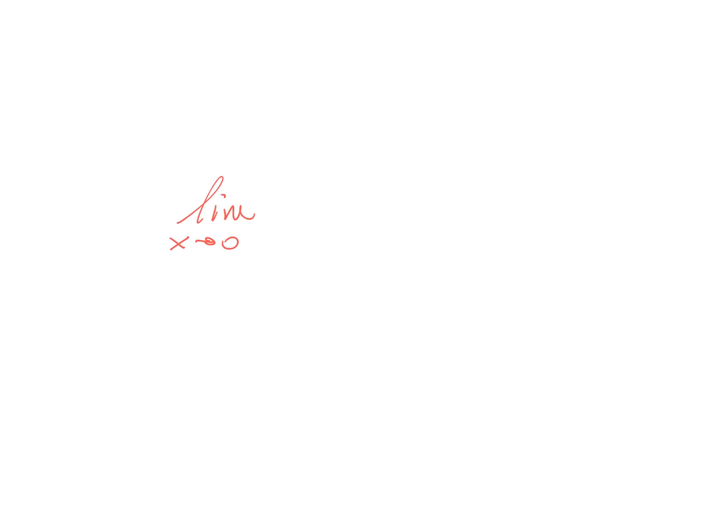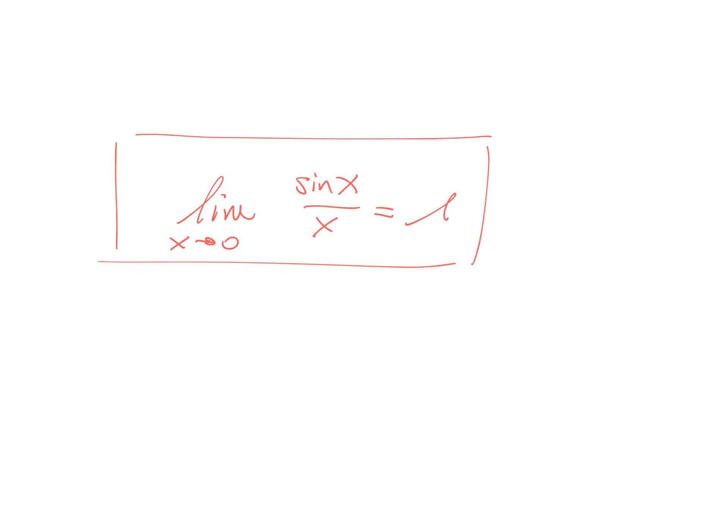And then to conclude, one very special limit: the limit for x going to 0 of sine x divided by x is equal to 1. You will see the proof of this in the exercise sessions. It is very important to remember that sine x over x gives you a 0 over 0 form, but when you calculate it correctly, this limit is equal to 1.